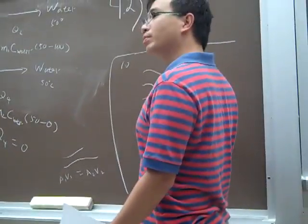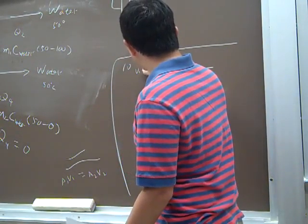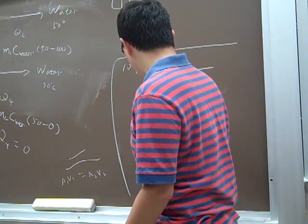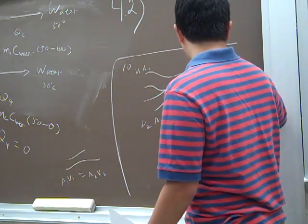Now, you have two strings merge to one string. So if you look at the velocity here is V1, the section here is A1, the velocity here is V2, the section here is A2. Here you have V3, A3.